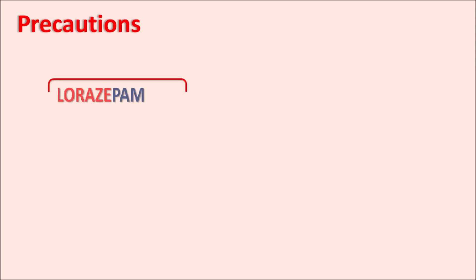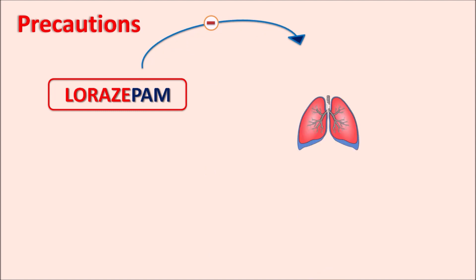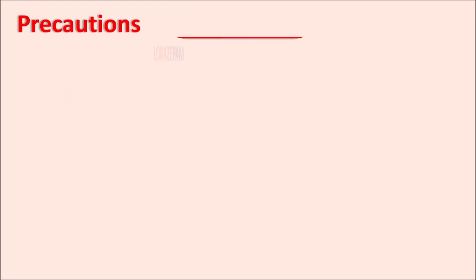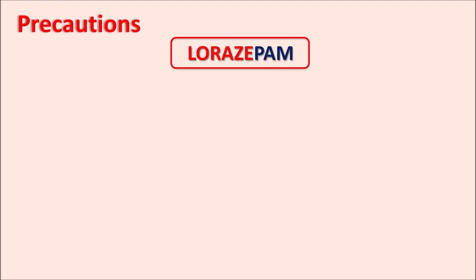One important precaution of lorazepam is that it can inhibit the respiratory system. In patients with sleep apnea syndrome, where bronchoconstriction is observed during sleep, or in patients with COPD (chronic obstructive pulmonary disorder), lorazepam should be given carefully because it can further reduce bronchial activity, potentially resulting in significant bronchoconstriction.